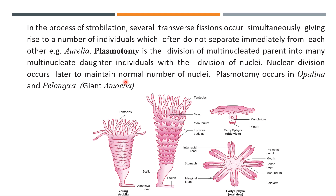Plasmotomy is the division of a multinucleated parent into many multinucleated daughter individuals without nuclear division. The nuclear division maintains the normal number of nuclei. It occurs in Opalina and giant amoeba, also called Pelomyxa.